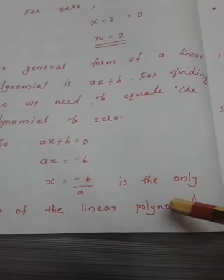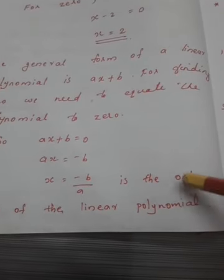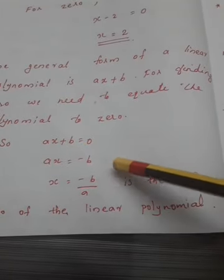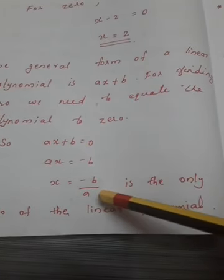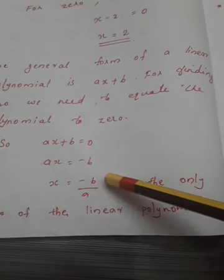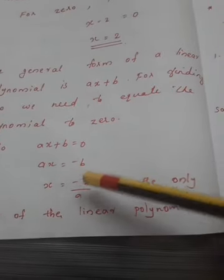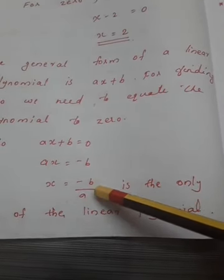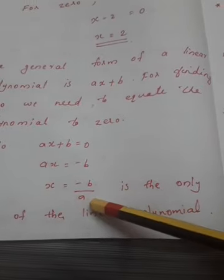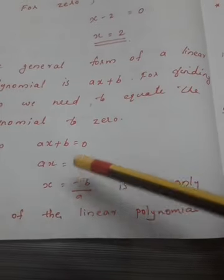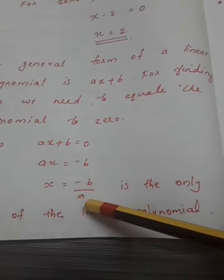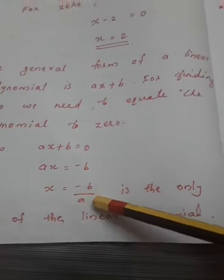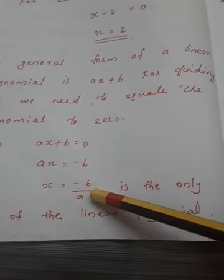Then x equals negative b by a. This is the one and only one zero of the linear polynomial. That means the zero equals negative of the constant term divided by the coefficient of x, which is negative b by a.